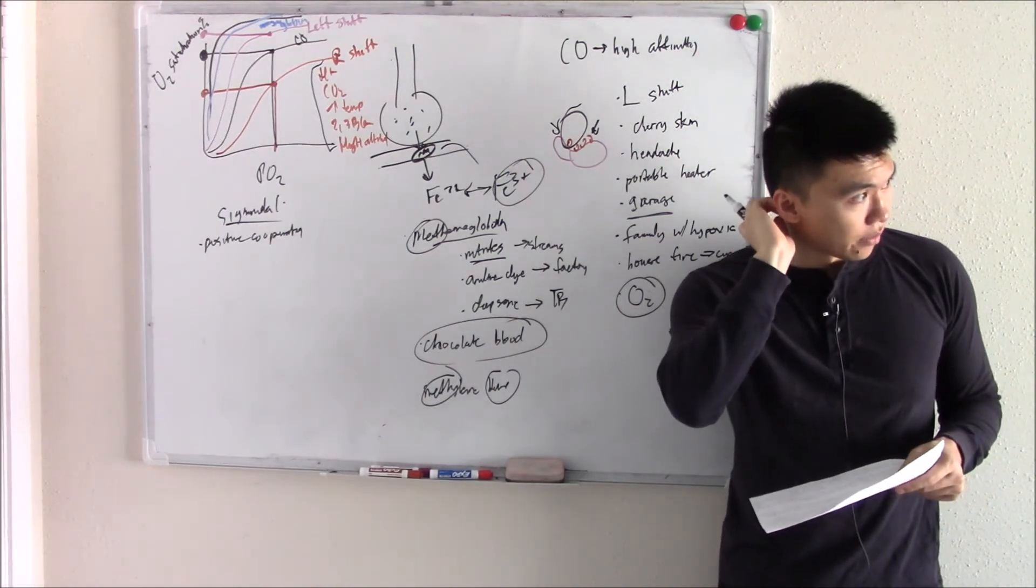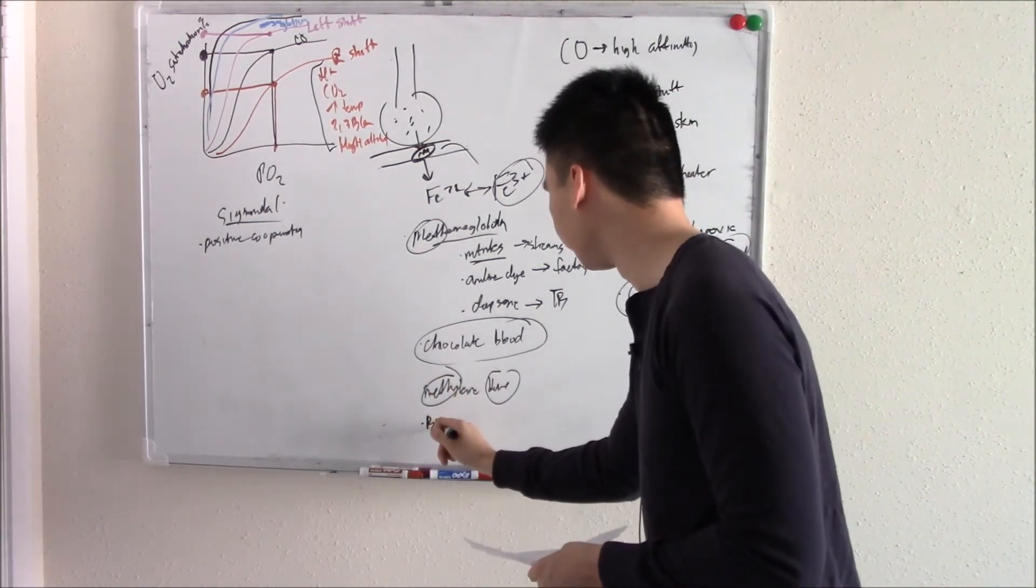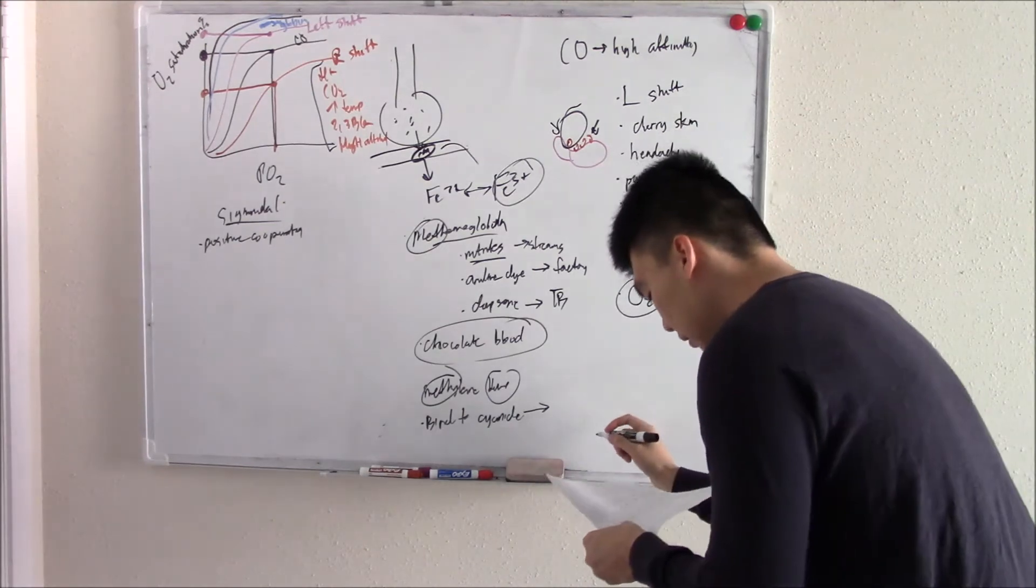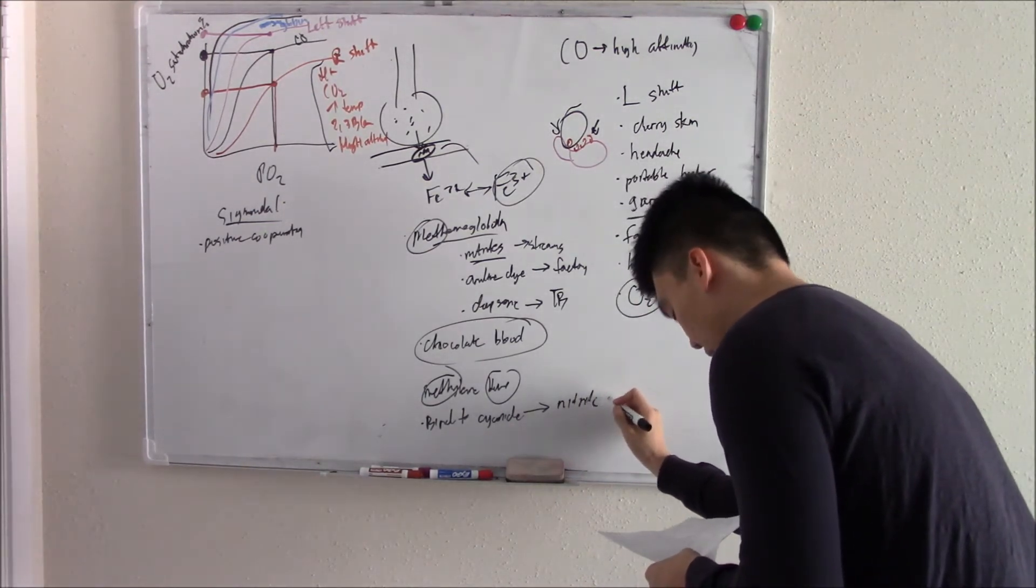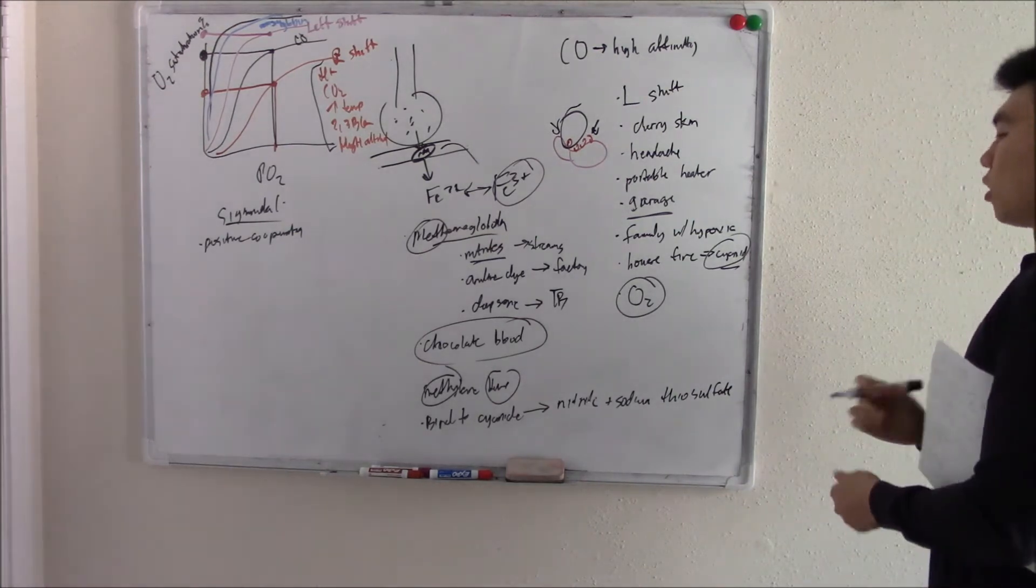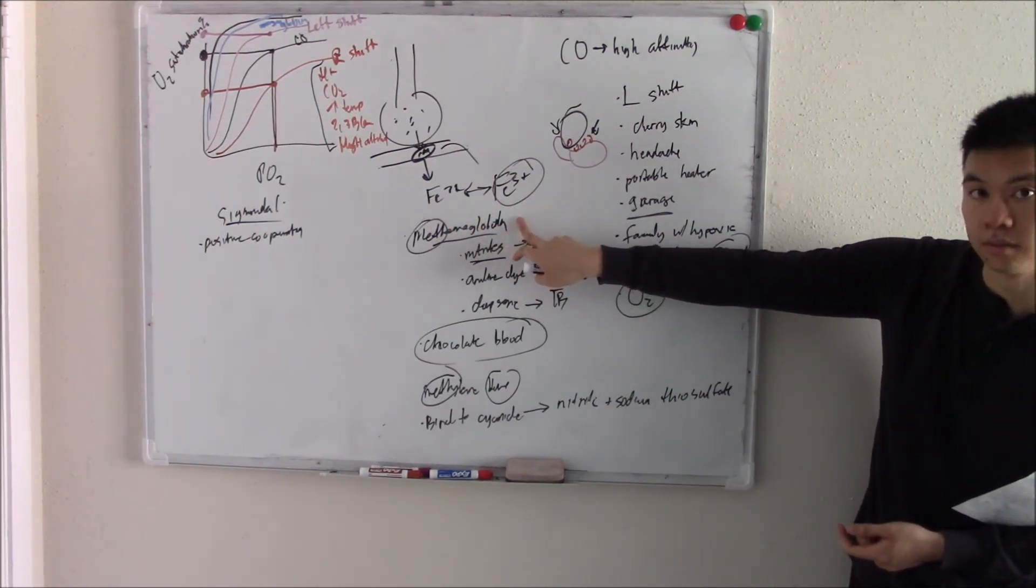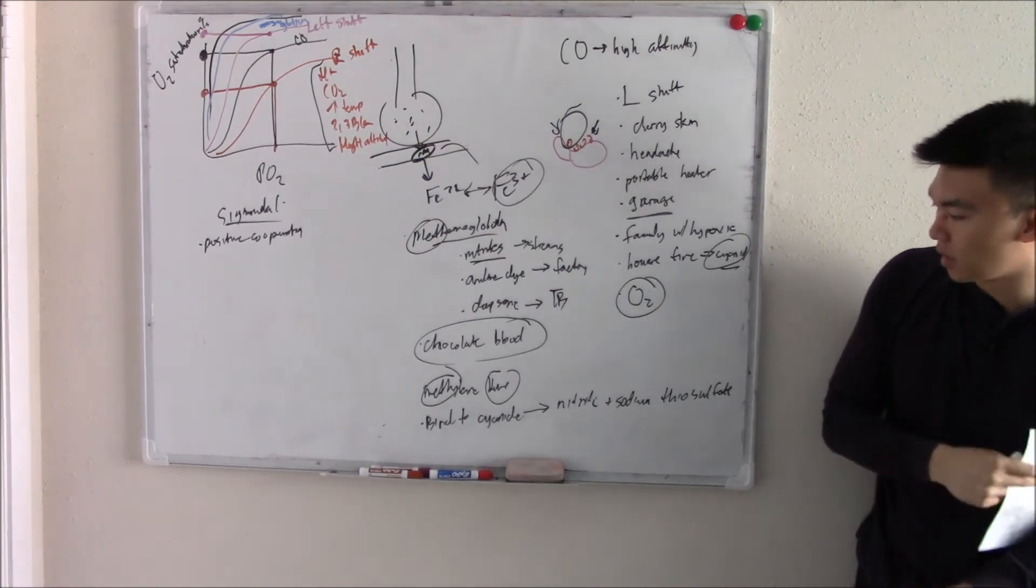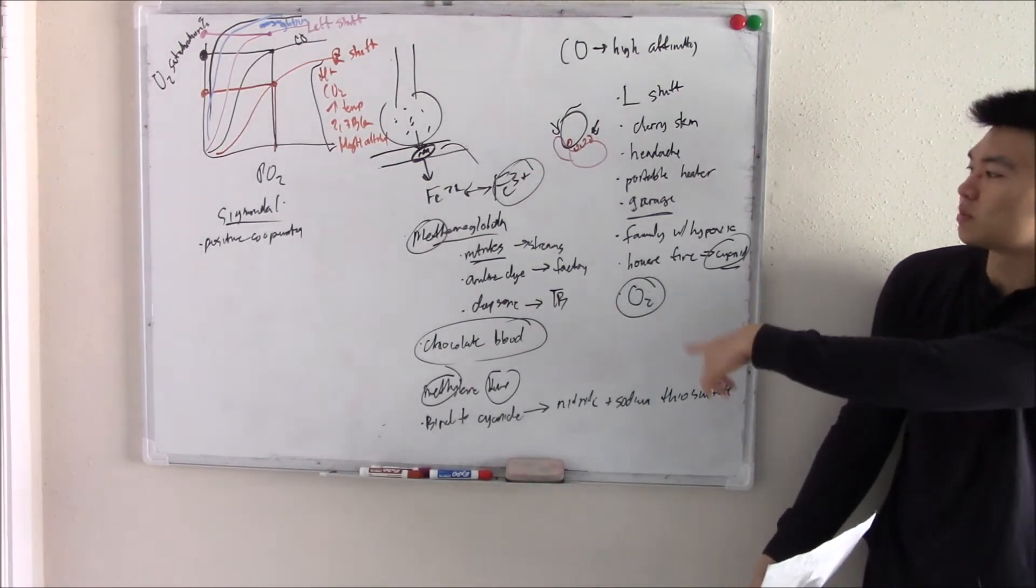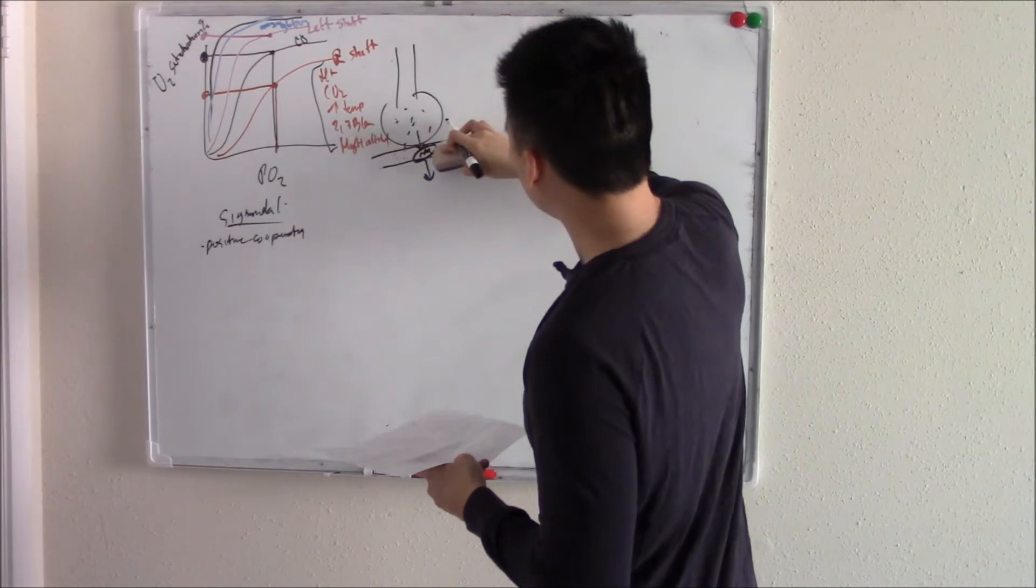A theoretical thing that they want you to know is that while methemoglobin can't bind oxygen, it loves to bind to our good friend cyanide. So you can see this in a lot of cyanide kits, cyanide antidote kits, in the form of nitrite plus sodium thiosulfate. So a person comes in with cyanide poisoning. You give them the nitrite, which will oxidize their blood into methemoglobin, and that will bind up all the cyanide. And then you'll give them this thiosulfate, which will turn that cyanide into something that is water soluble. You'll pee it all out. Then you can just reduce back the methemoglobin. That's a theoretical thing that they want you to know.